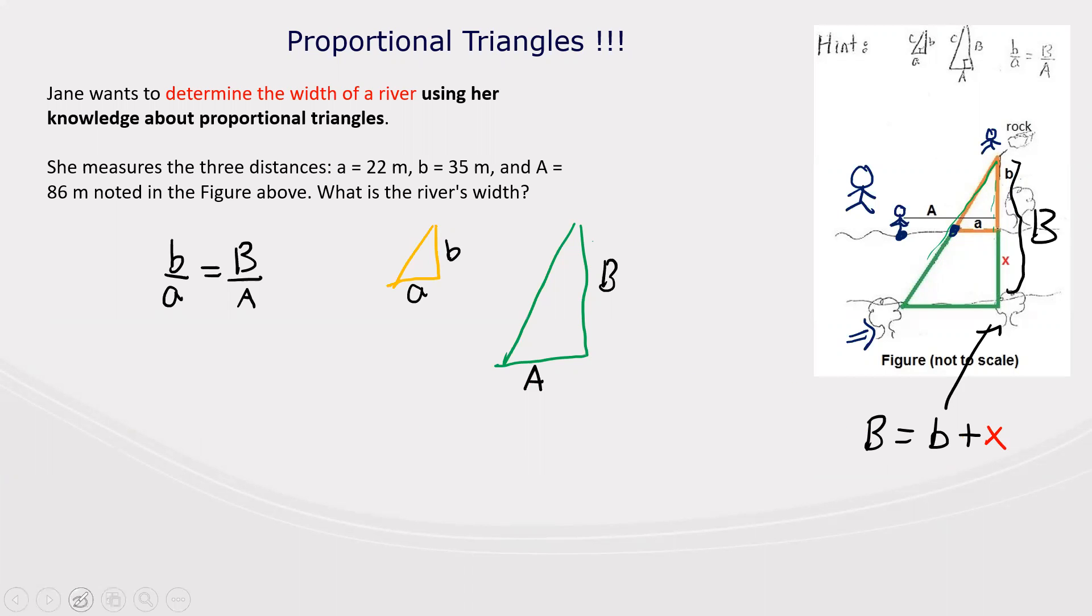If I use this equation here, then this becomes b over a equals b plus X over capital A. And now she needs to solve for X, because X is the width of the river.